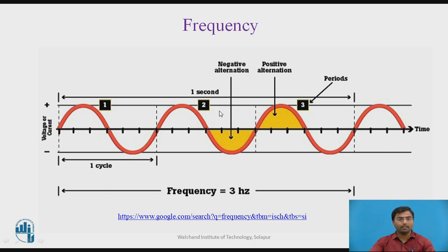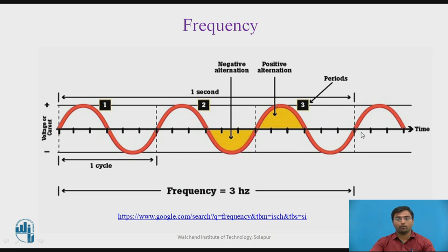This shows the negative alternation and positive alternation — these are called periods, that is the time period T. This is the time required to complete one cycle.